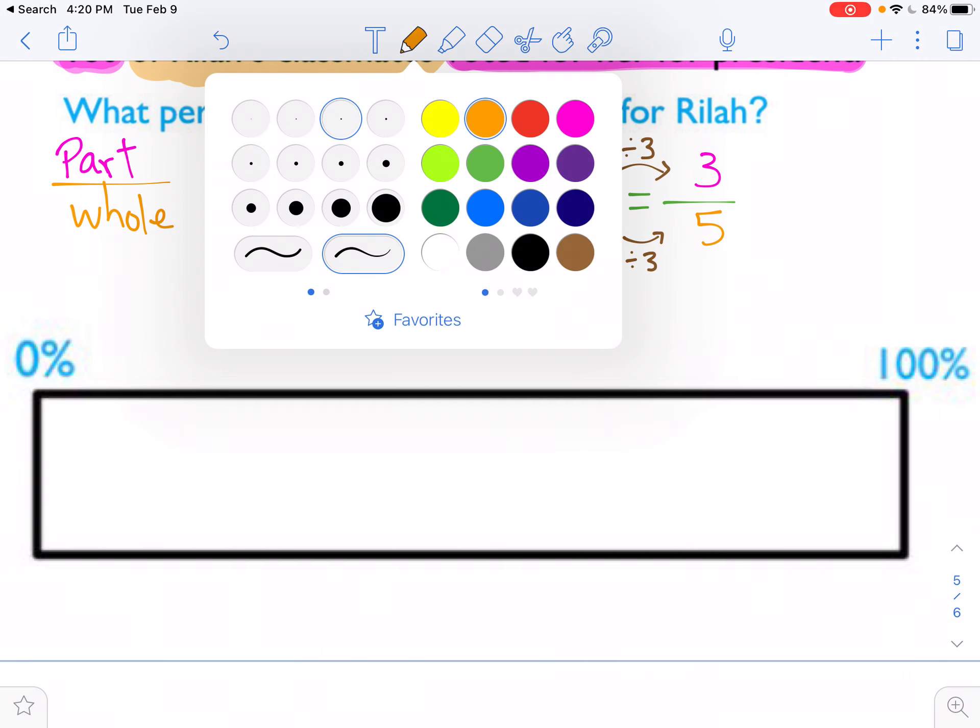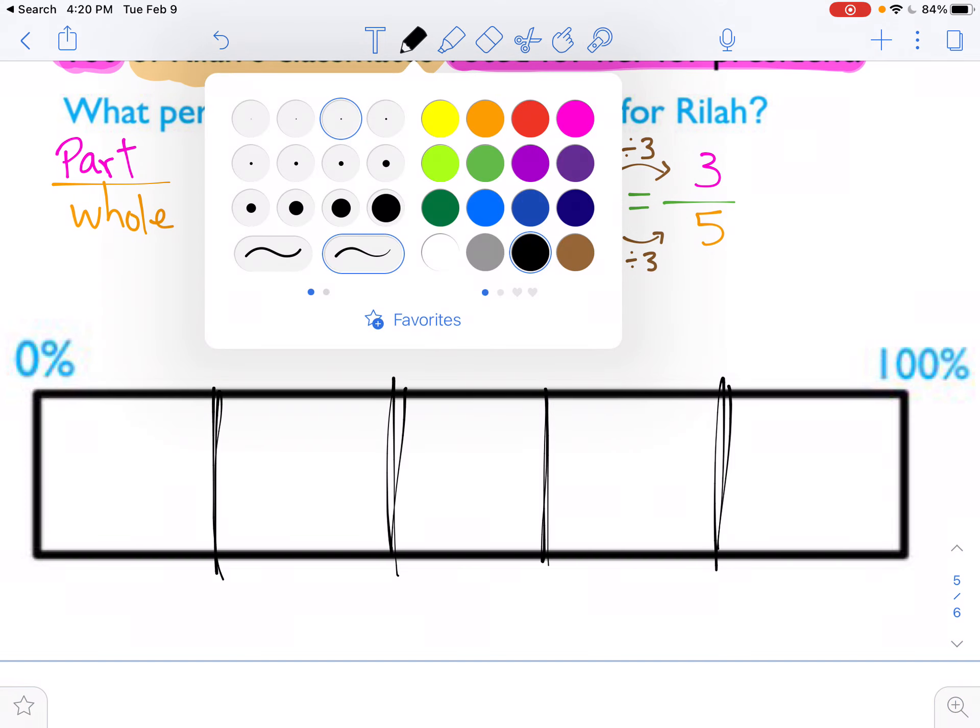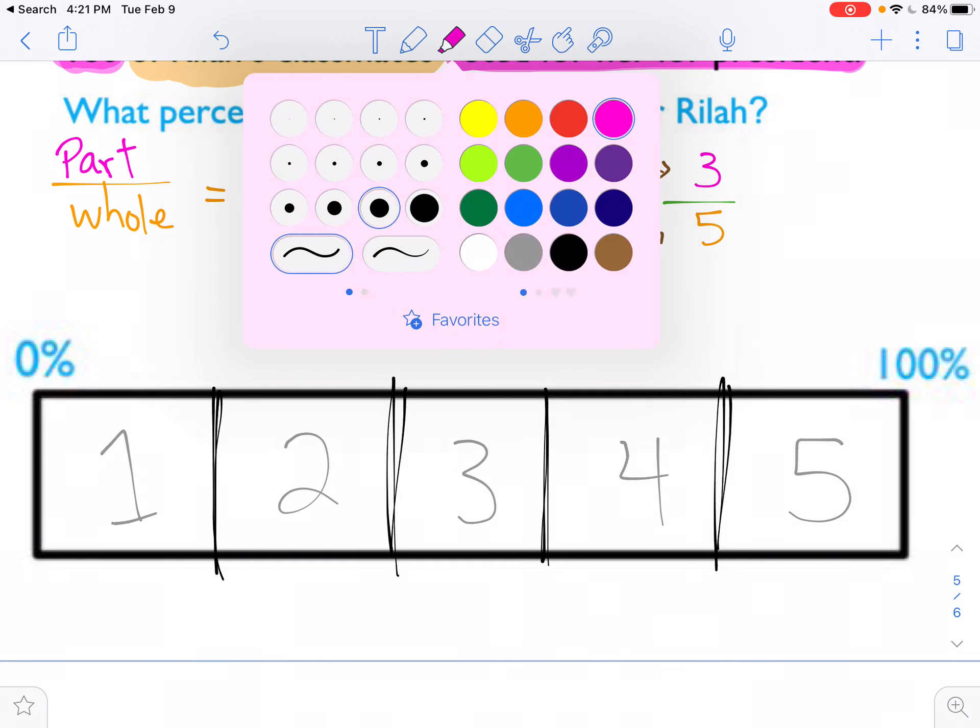Boy, 5 comes up a lot. All right, pretty good. I'm going to write in my numbers. 1, 2, 3, 4, 5. And I need to color in 3 of those parts.